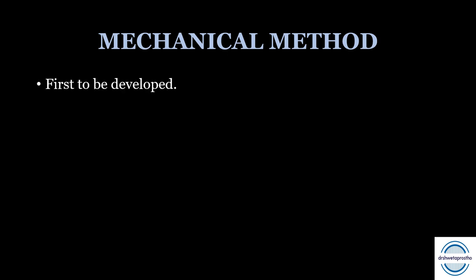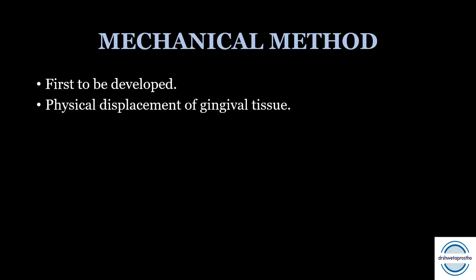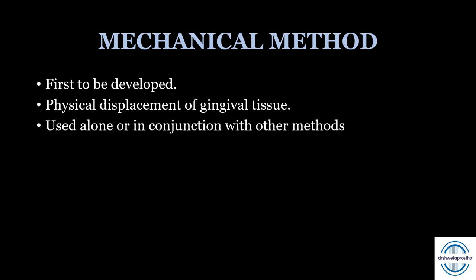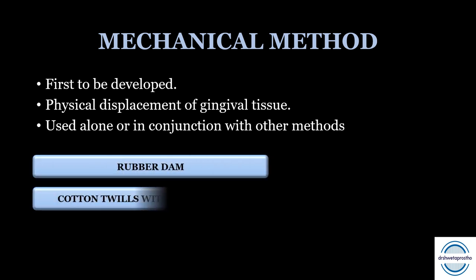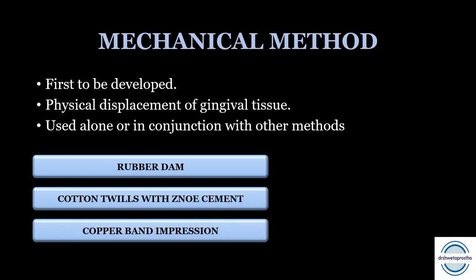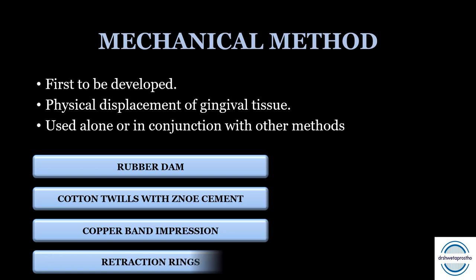Mechanical methods are the oldest methods — they were the first to be developed. The mechanical method involves physical displacement of the gingival tissue. It can be used alone or in conjunction with other methods; combinations give better results. Some mechanical methods are: rubber dam, cotton dwells with zinc oxide eugenol cement, copper band method, and retraction rings.